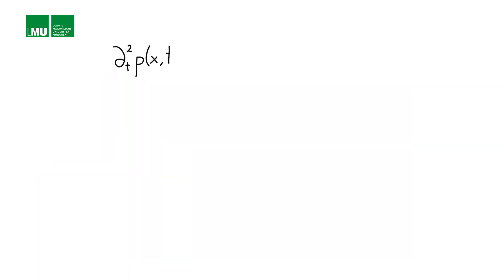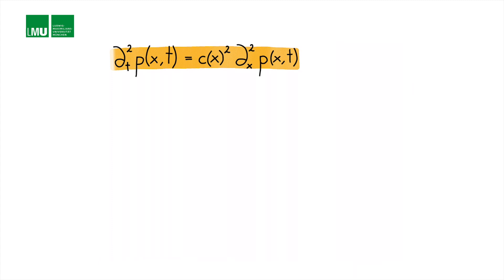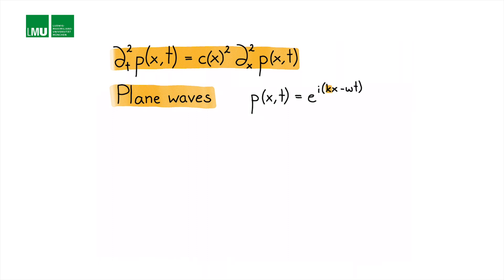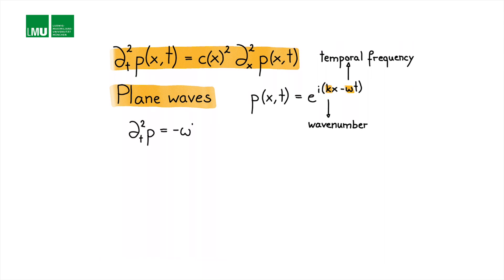Before diving into the discrete version, let's look at the acoustic wave equation in continuous form: the second derivative in time of p equals c squared times the second derivative in space of p, omitting the source term. Recalling plane waves, p(x,t) = e to the i(kx minus omega t), with k the wave number and omega the temporal frequency. The second time derivative gives minus omega squared times the plane wave, and the second space derivative gives minus k squared times the plane wave.